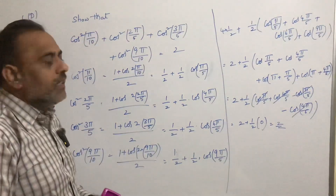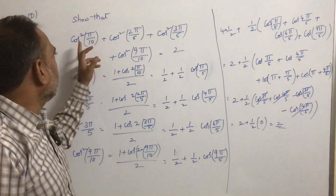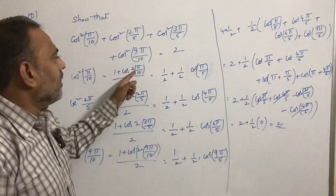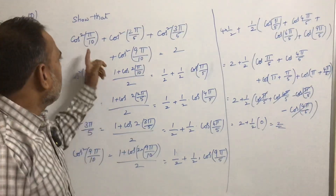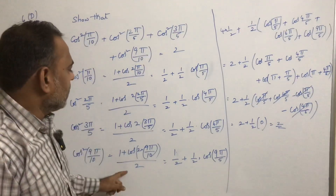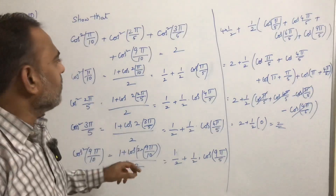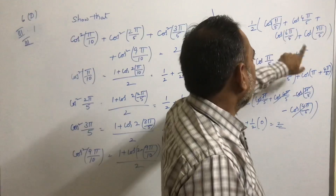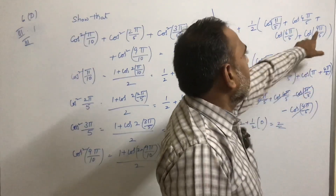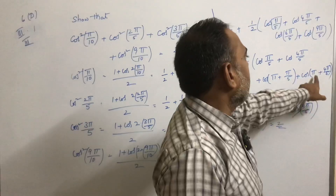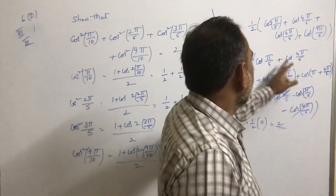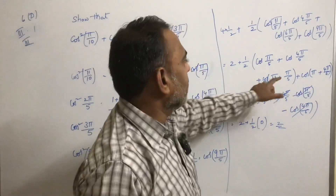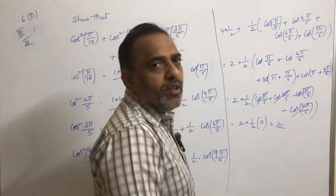The simple tricks here are: first, convert cos²θ into (1 + cos2θ)/2. Second, 6π/5 can be written as π + π/5, and 9π/5 can be written as π + 4π/5. These two tricks make it easy to solve the problem.